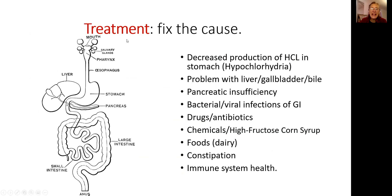Treatment depends exactly on the cause. If you have low production of hydrochloric acid, address that so bugs from food don't survive into the small intestine. Fix gallbladder problems and pancreatic insufficiency to create the right environment for beneficial bugs. Deal with bacterial or viral infections, stop taking unnecessary antibiotics, stop eating junk food, and eliminate dairy if it irritates your digestive tract. Fix constipation. And only then consider the immune system — never try to stimulate the immune system without reason. An unhealthy immune system typically means there is a low-grade infection in the body driving it.